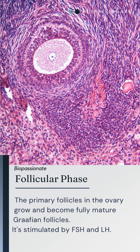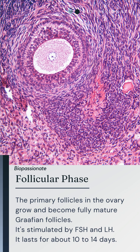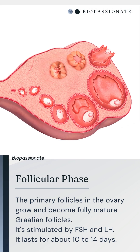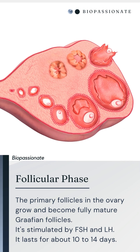During the follicular phase, the primary follicles in the ovary grow and become a fully mature Graafian follicle.